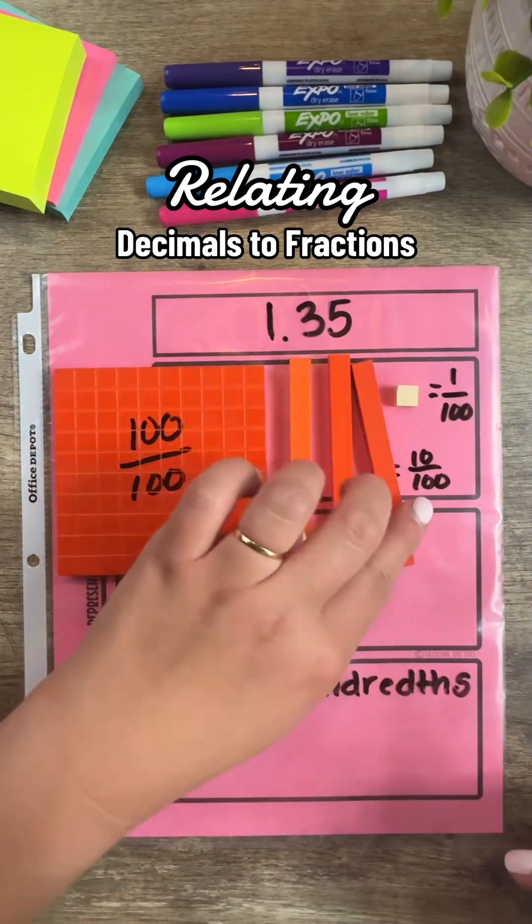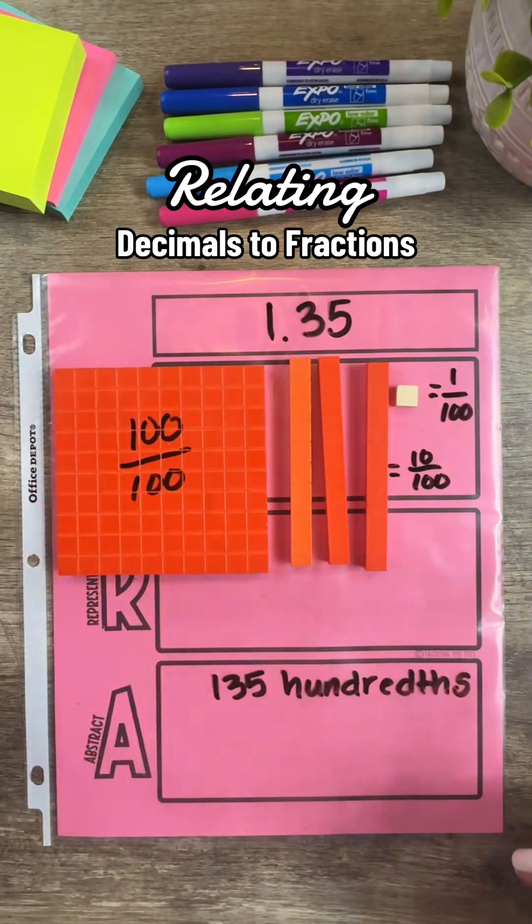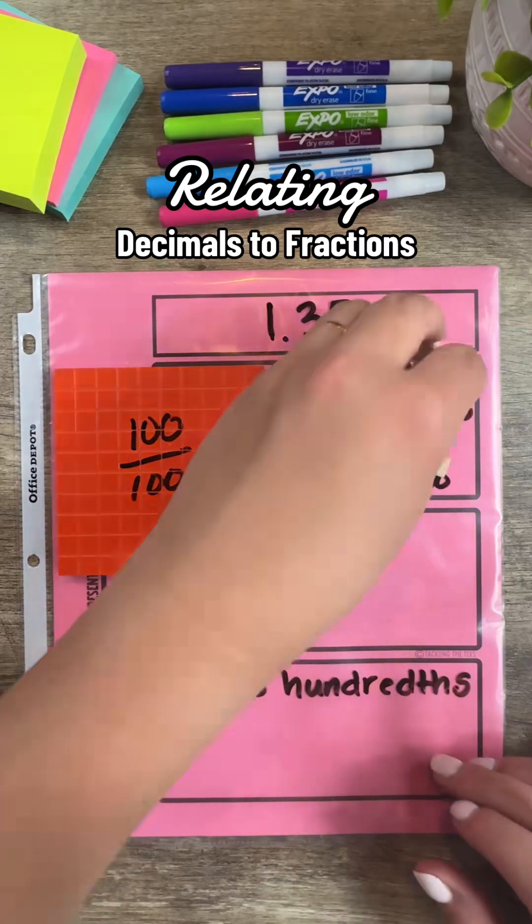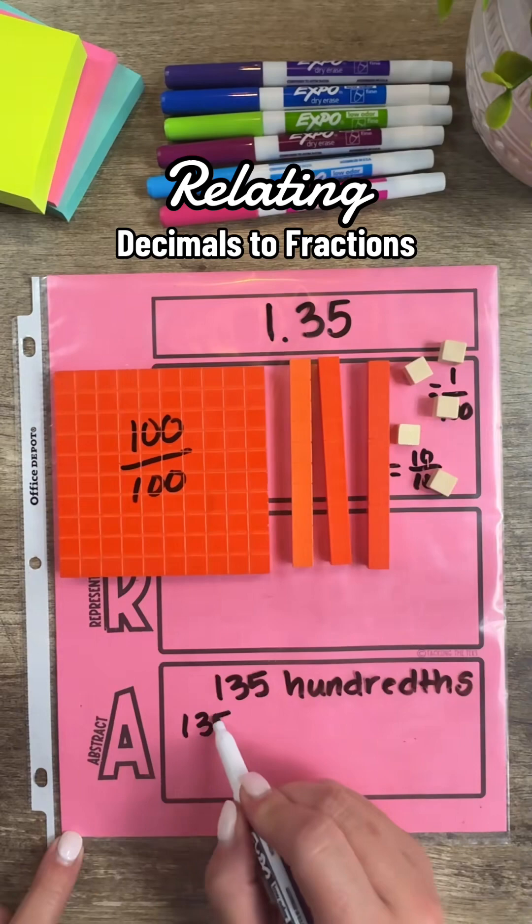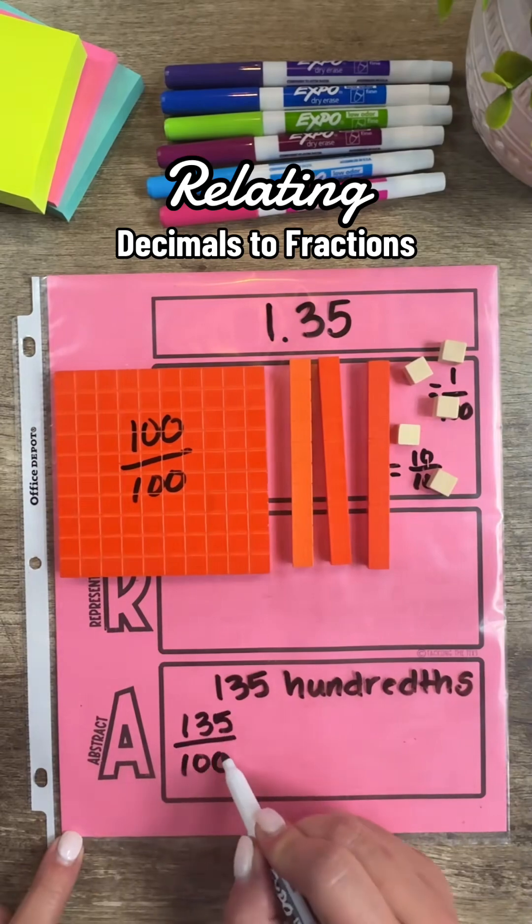We will add 2 more tenths to make a total of 30 hundredths and 4 more blocks for a total of 5 hundredths. Now my model is representing 135 hundredths.